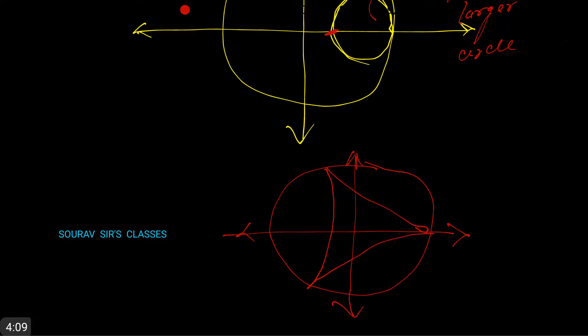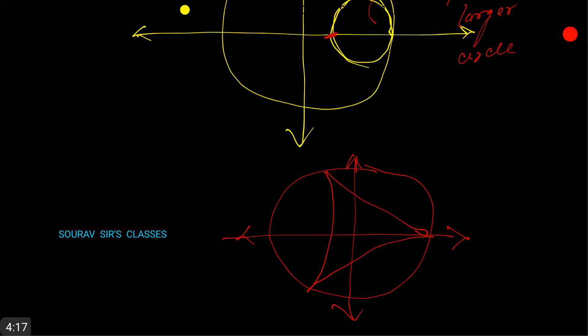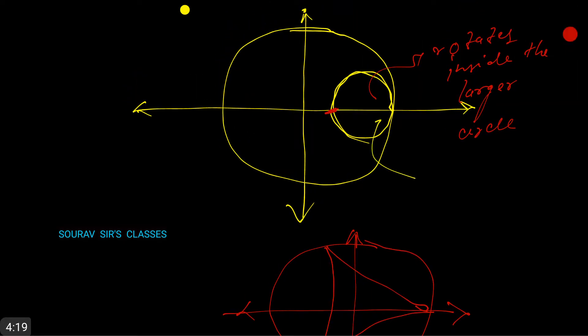Now just note that in an asteroid, the radius of this circle is a quarter of the radius of this circle. So let this radius be R and this radius be r. So they are related by r equals R by 4.